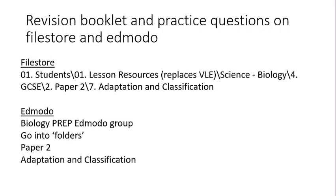That's the end. Thank you very much for watching if you made it all the way through. I'll show you where the further resources are, because some of you will have been asked to complete some practice questions. Click the resources tab on Kevin's website, then click student, lesson resources, science biology, GCSE. This is paper two, and then you'll find the folder for adaptation and classification. The topic-based questions with mark schemes are in there, as is the revision booklet. If you're going through Edmodo, go onto the biology prep Edmodo group, go into folders, paper two, and adaptation and classification, where you'll also find this video, the revision booklet, and the practice questions with their marks. Thank you very much for watching — peace out, boys and girls.